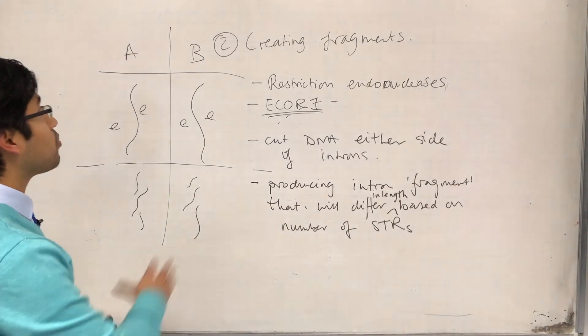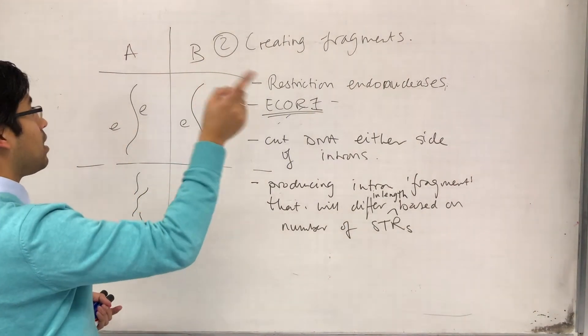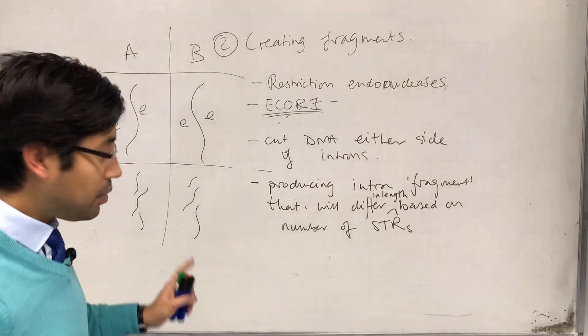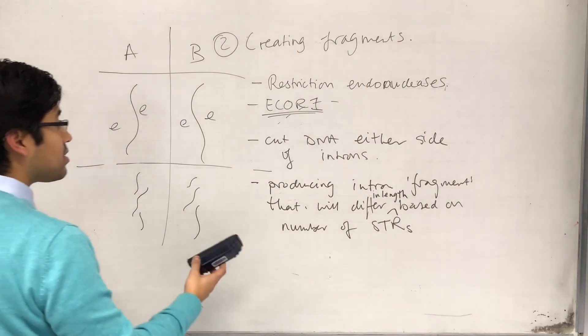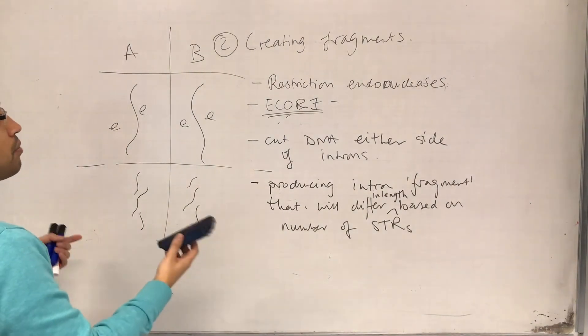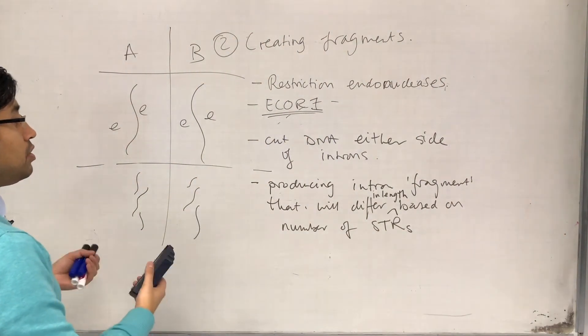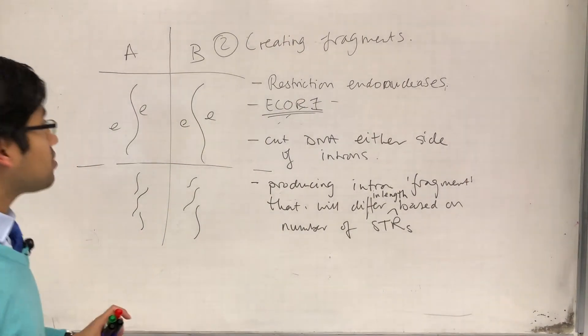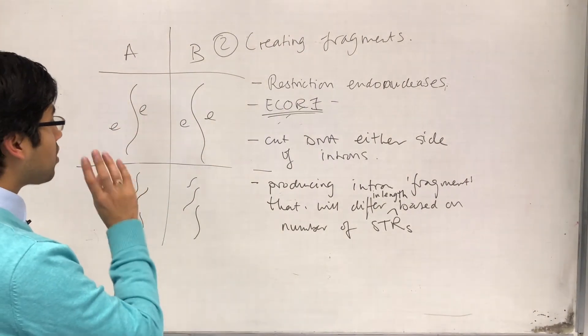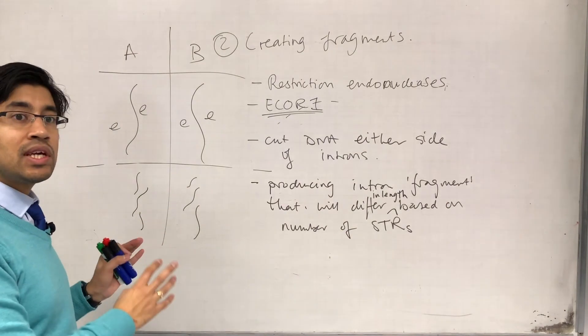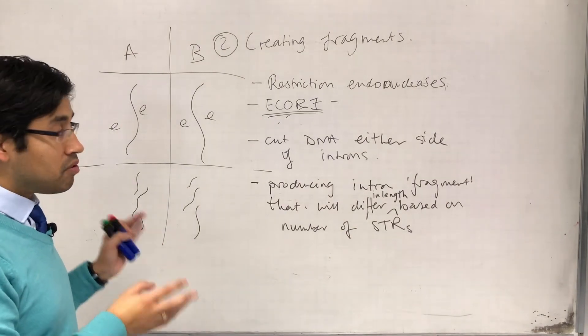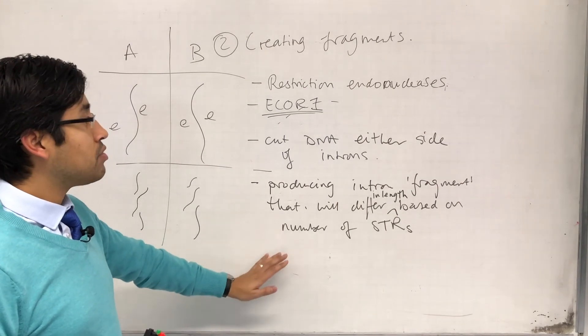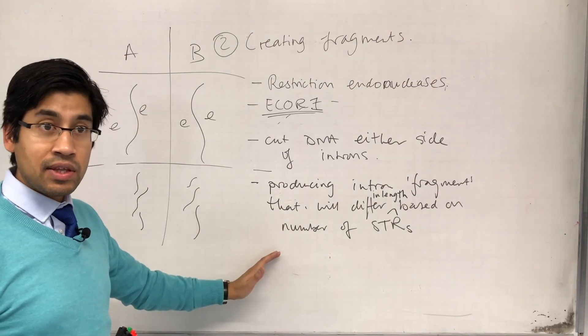We are now at a point where we have isolated the DNA, we have created the fragments. But we are not ready to do electrophoresis because these fragments might not be numerous enough. We might not have enough DNA. We've isolated DNA, we've cut fragments out, but we might not have enough DNA to do the electrophoresis. Remember at some point we have to visualize the DNA and visualization depends on how many molecules of DNA that you have.